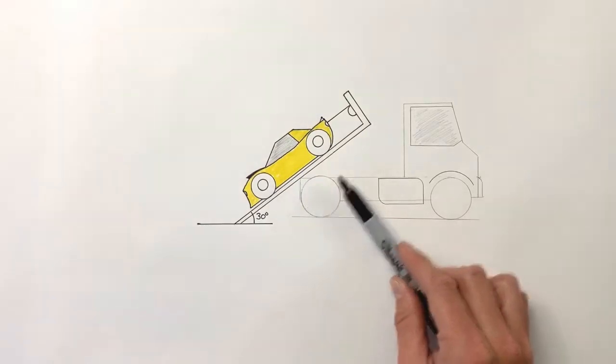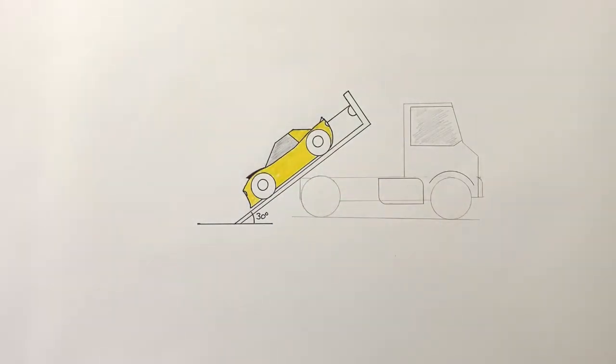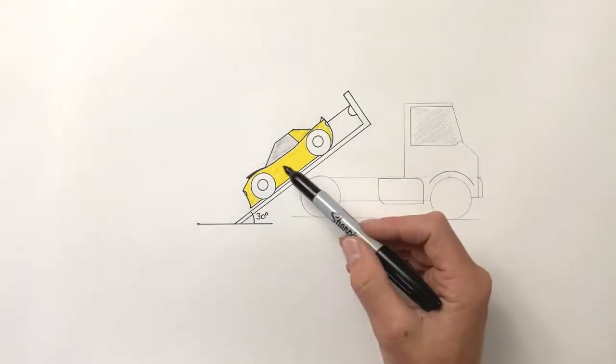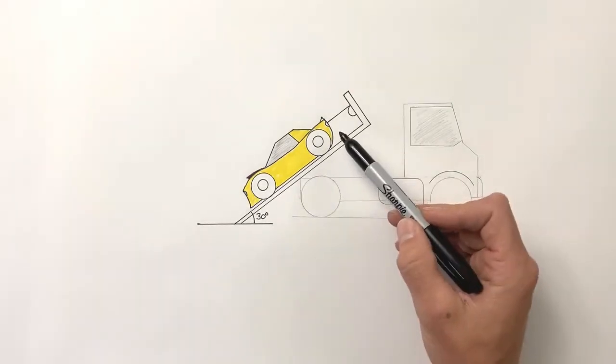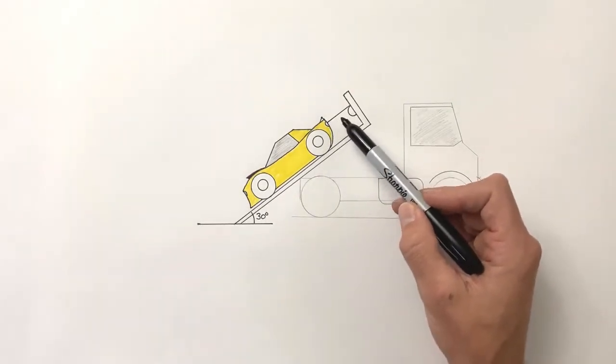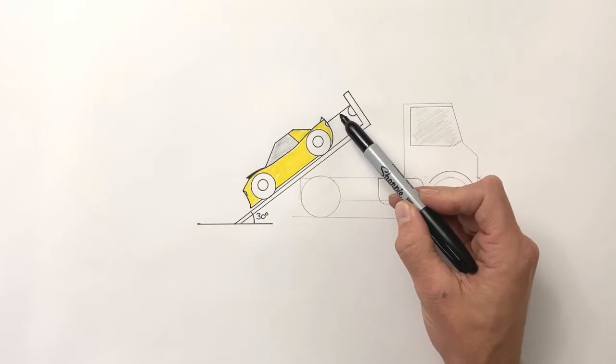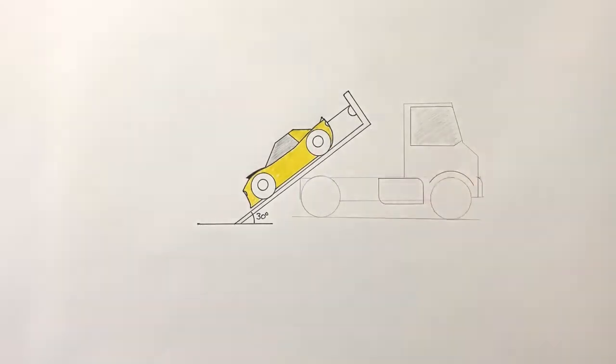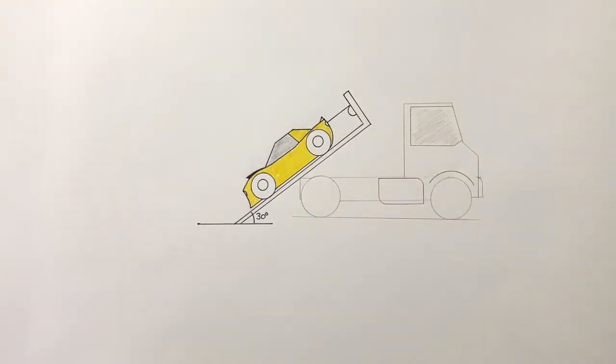What we're going to do is look at the free body diagram for this car and take a look at what forces are acting on the car as it's being winched up onto the bed. We're going to look at, ultimately, the tension in the cable pulling the car onto the truck bed. When drawing a free body diagram, we need to remember our rules: we're going to show all the forces acting on the car and draw arrows to represent those forces.